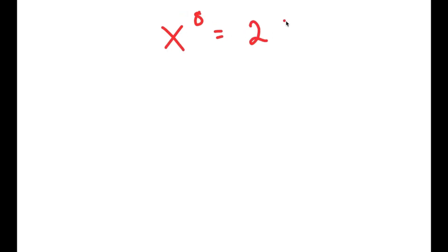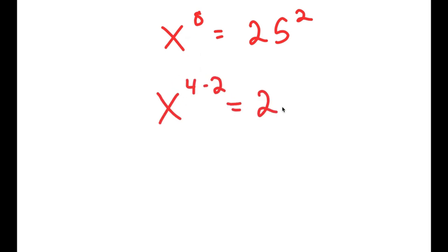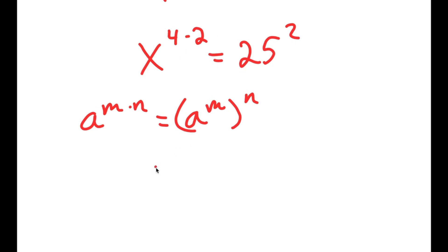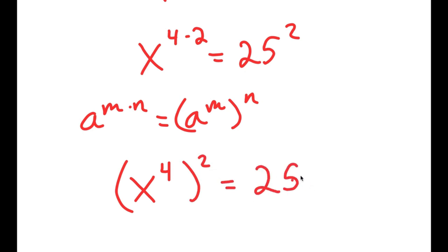In this video, I'm going to solve the equation x to the power of 8 equals 25 squared. To solve this, I'll first rewrite it as x to the power of 4 times 2 equals 25 squared. Using the property a to the power of m times n equals a to the power of m to the power of n, x to the power of 4 times 2 becomes x to the power of 4 to the power of 2, and this equals 25 squared.